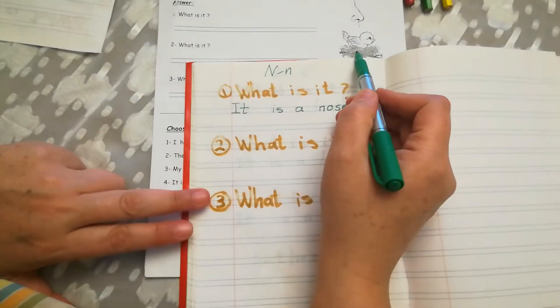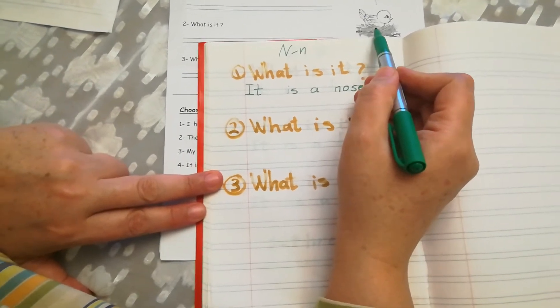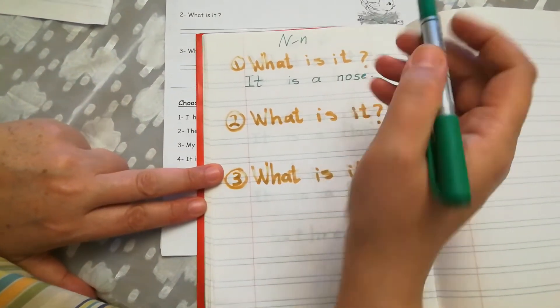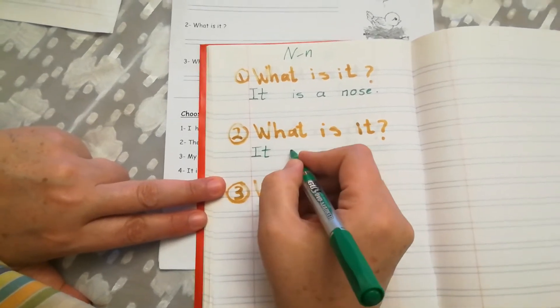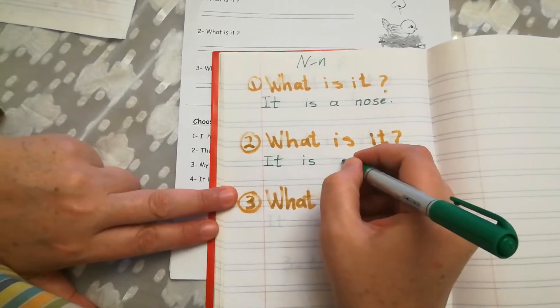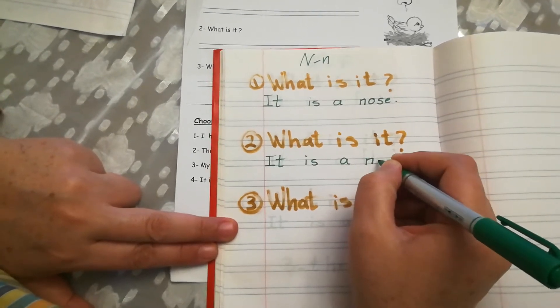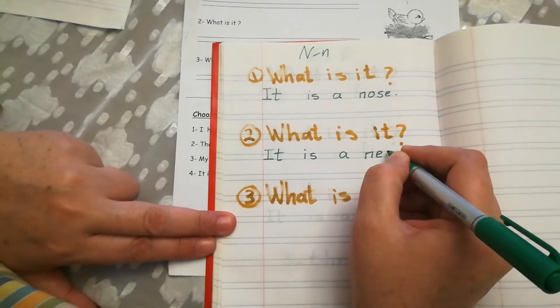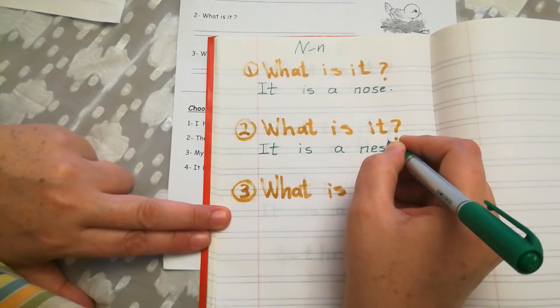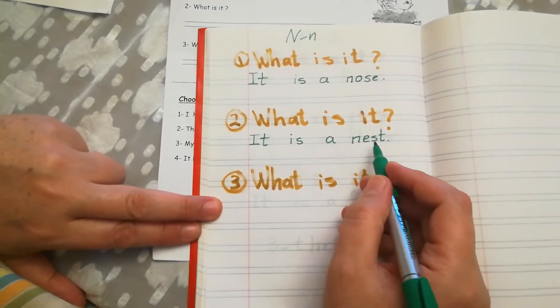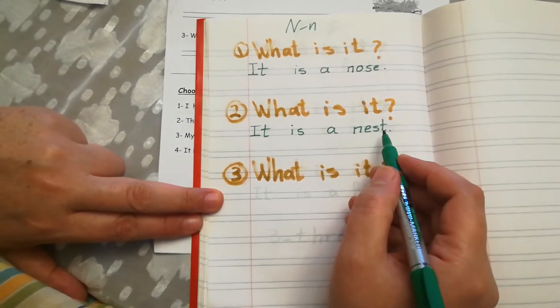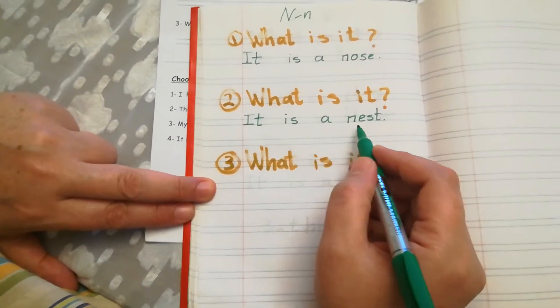What is it? Nest, nest. It is a nest. Let's try. It is a nest. N-E-S-T. N-E-S-T. It is a nest.